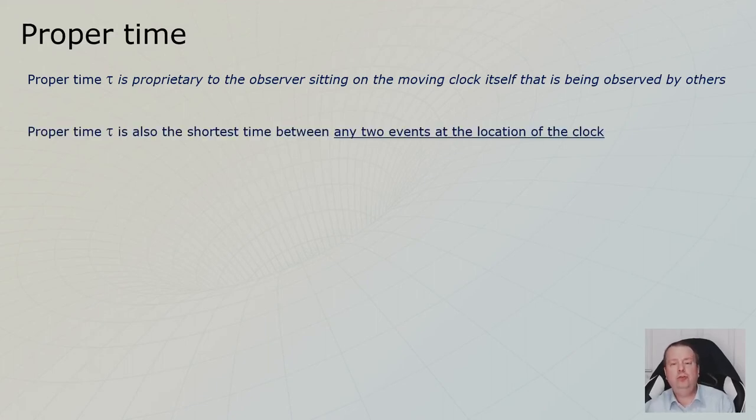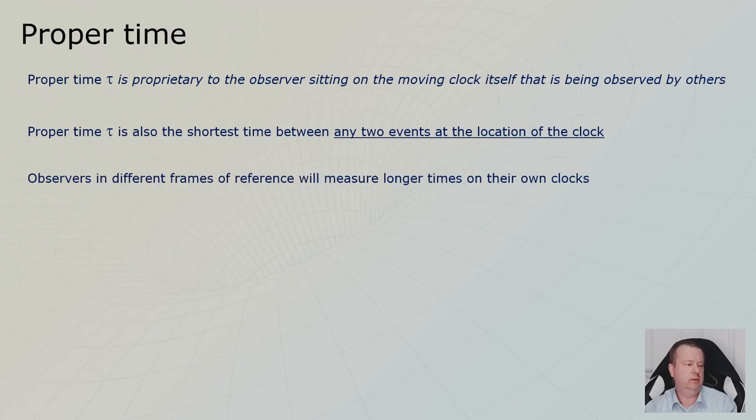It's also the shortest delta t. So if you are where the action is, the delta t between the two actions is the smallest. Other observers moving at different speeds will measure longer delta t's for these two events.